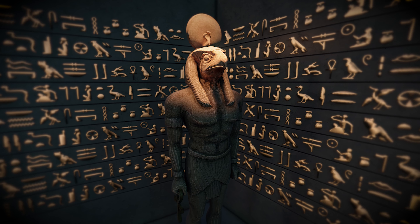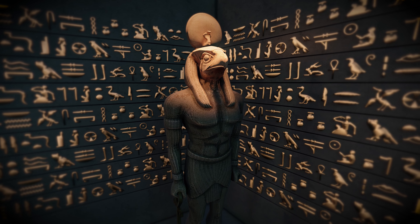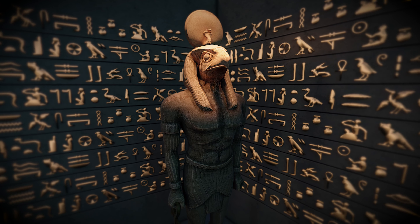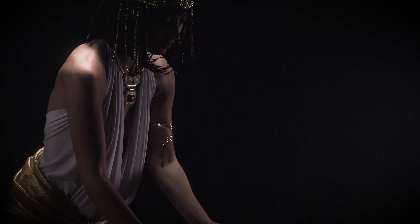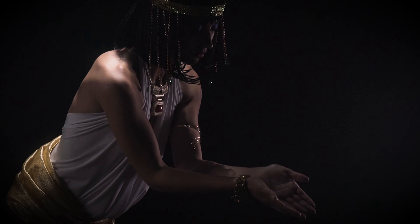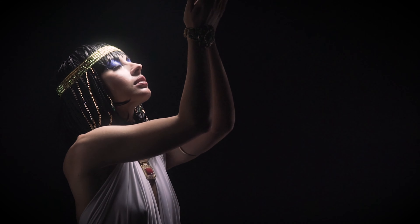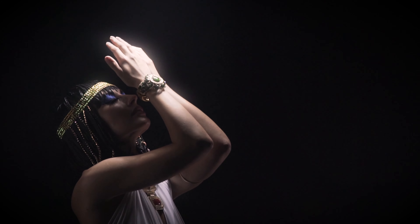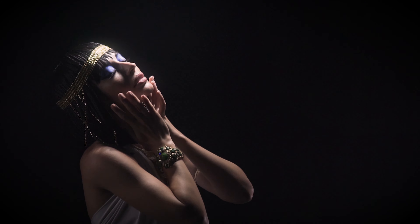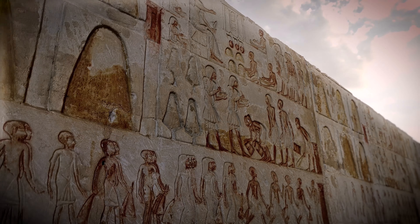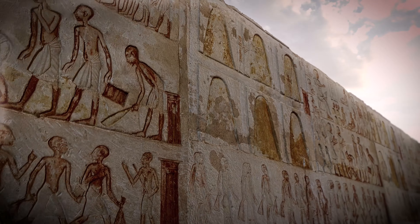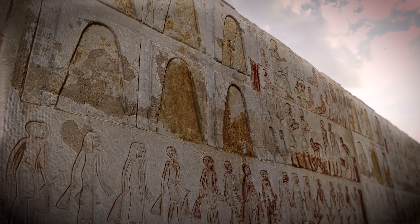Magical and ritualistic practices were integral to treatment. Ancient Egyptians believed in the interplay of supernatural forces and the human body. Magical incantations, religious rituals, and amulets might have been employed alongside medical treatments to invoke divine intervention and facilitate healing. Hygiene and lifestyle modifications, such as improving sanitation practices and ensuring access to clean water sources, were also promoted.